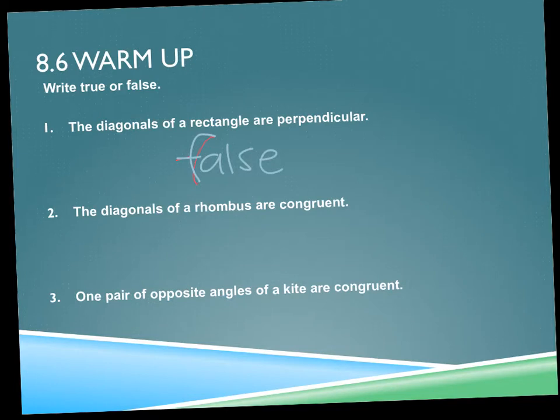The diagonals of a rhombus are congruent — true or false? False. What do I know about the diagonals of a rhombus? They're perpendicular. So if you had switched those, then it would have been true.